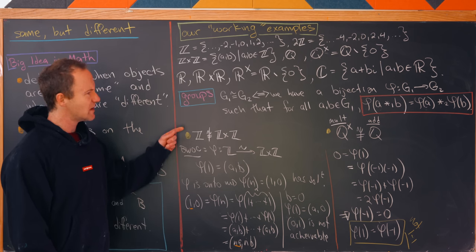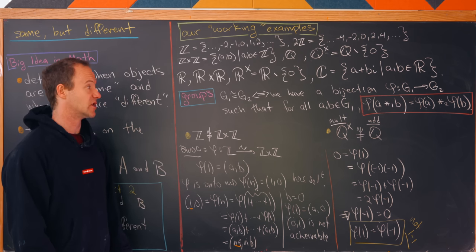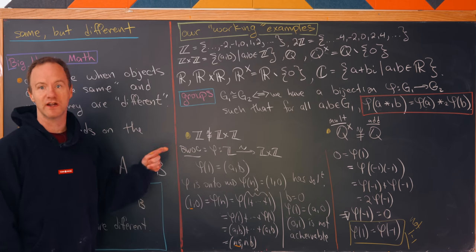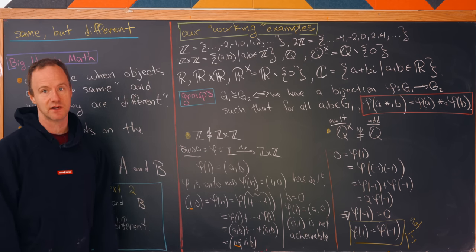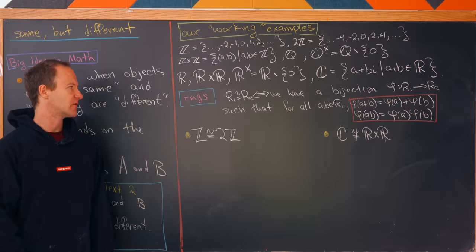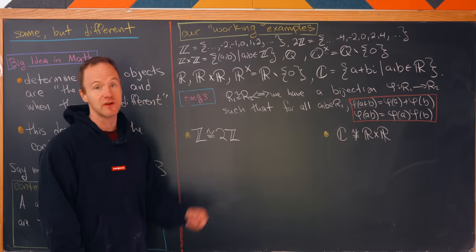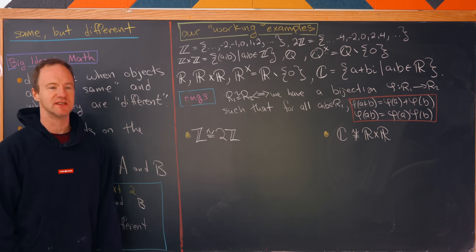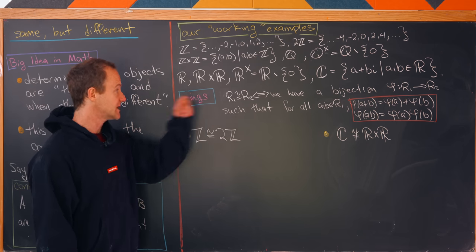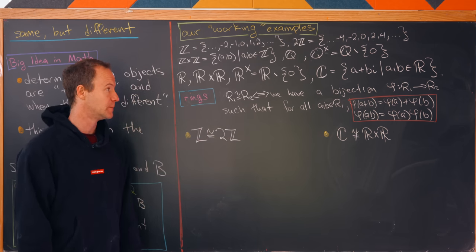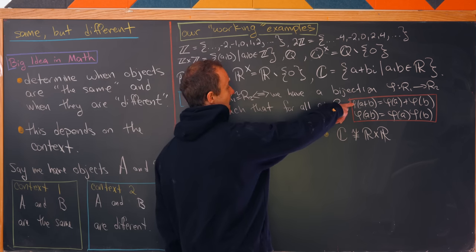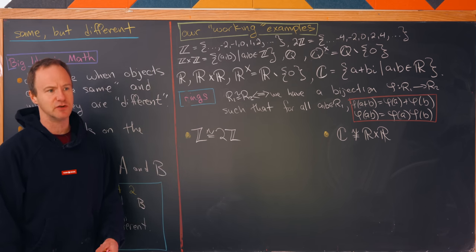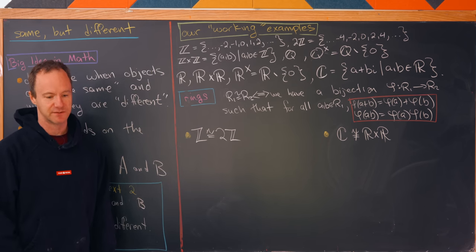Now let's restrict even further to rings and show that the two groups we found to be isomorphic are not the same as rings. Rings are sets with two operations — addition and multiplication. For rings to be the same we need a bijection that satisfies the addition property and the multiplication property — it must preserve, or respect, both operations.